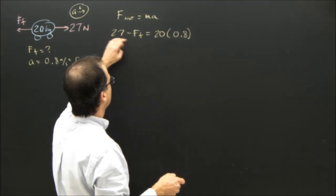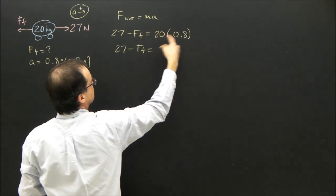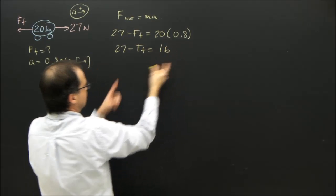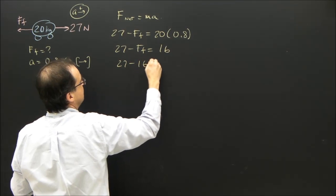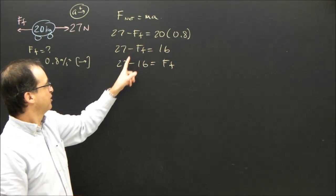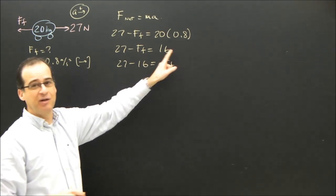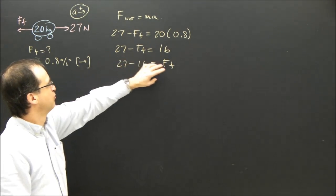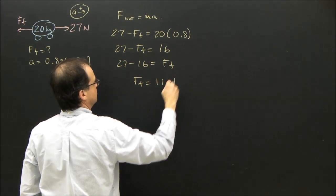So we got force of friction. I'm going to rearrange. 27 minus force of friction equals 16. So I'm going to rearrange. 27 minus 16 equals the force of friction. I brought the 16 over here, which became negative. I took the force of friction, brought it to the other side. It became positive. So the force of friction is 27 minus 16. The force of friction is 11 newtons.